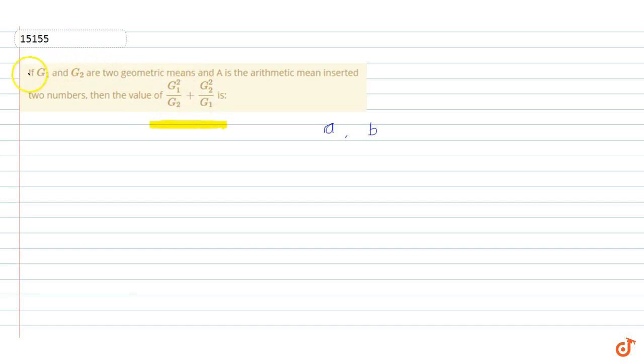We are given g1 and g2 are geometric means. So if we see, the first term is a, then g1, then g2, and then what? Then b. And similarly, if we see the next term.